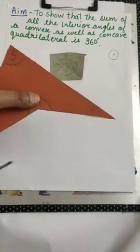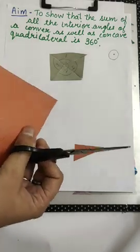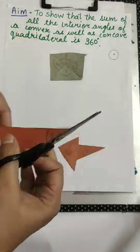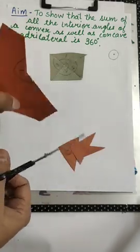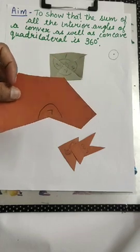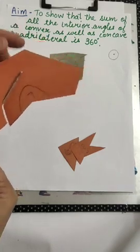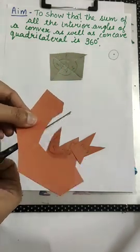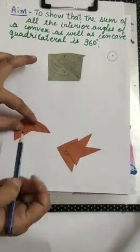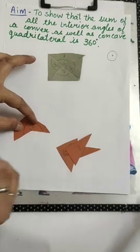For this, again the same procedure. I am going to cut all the interior angles of this quadrilateral. Three angles are very easy to cut. You might be thinking how can we cut this one. No problem. We can cut like this. Just we need to remember that the interior angle at this vertex is this.